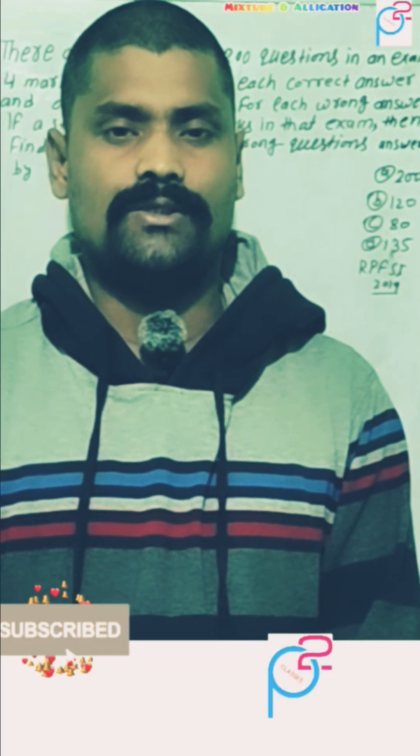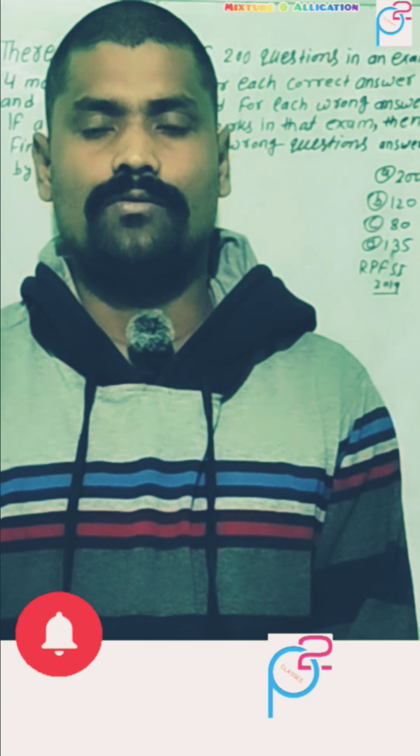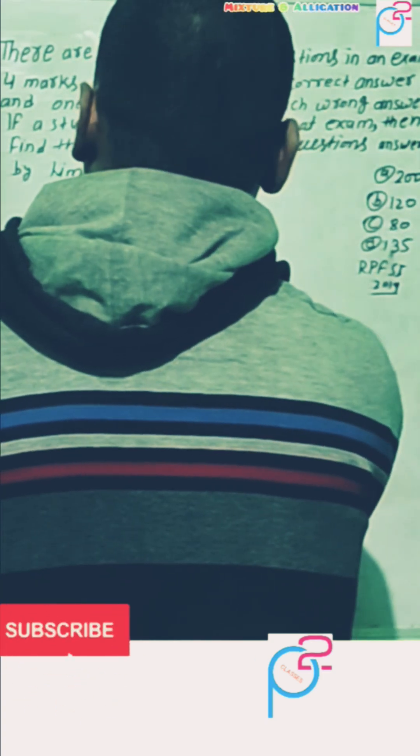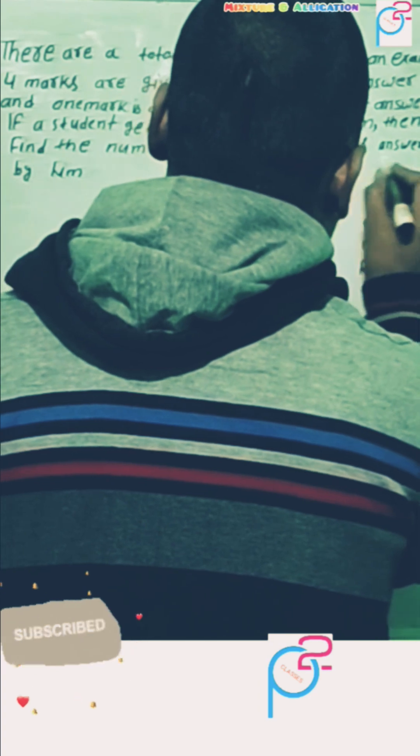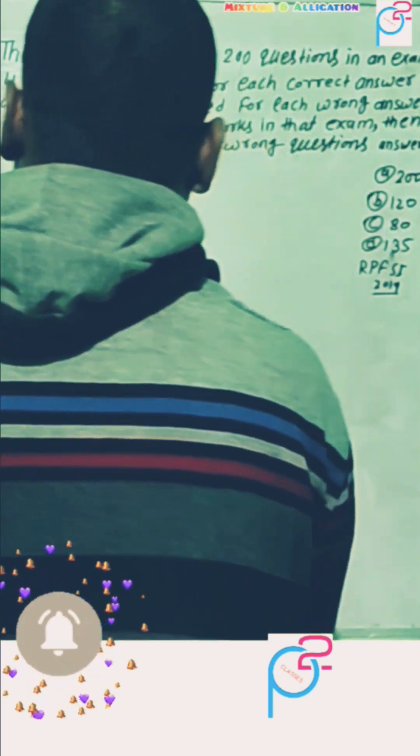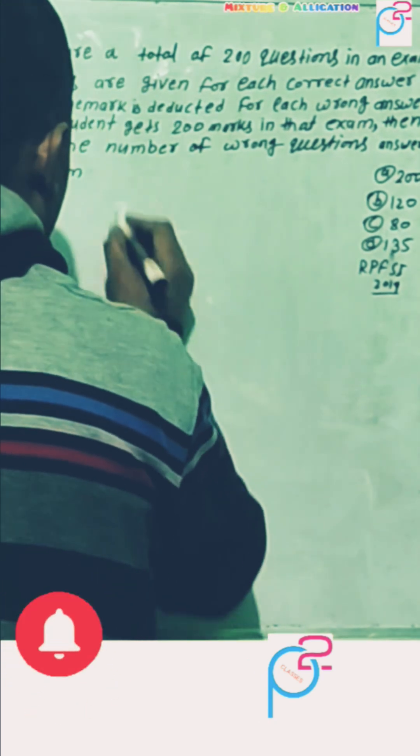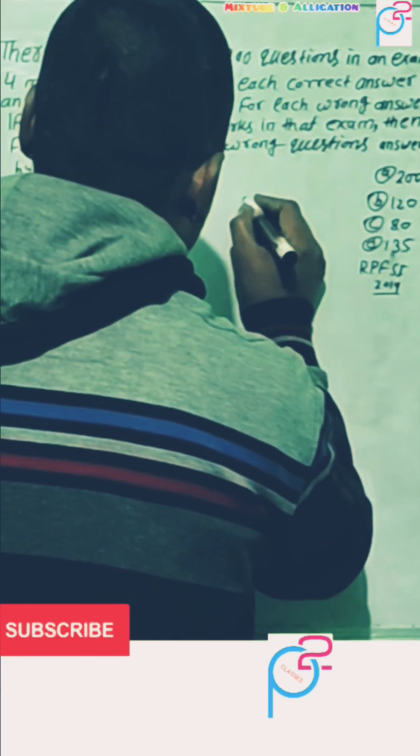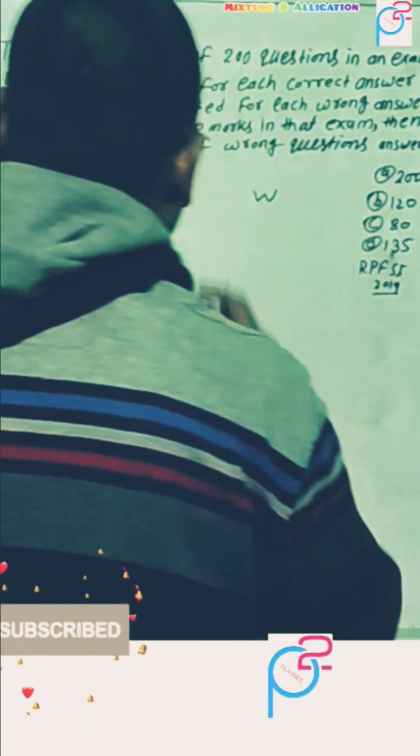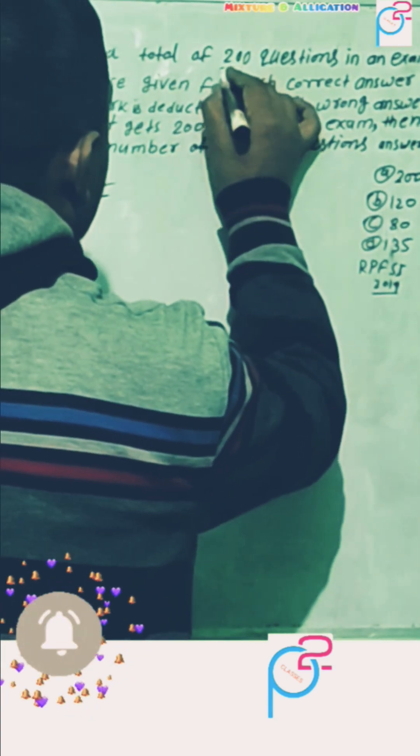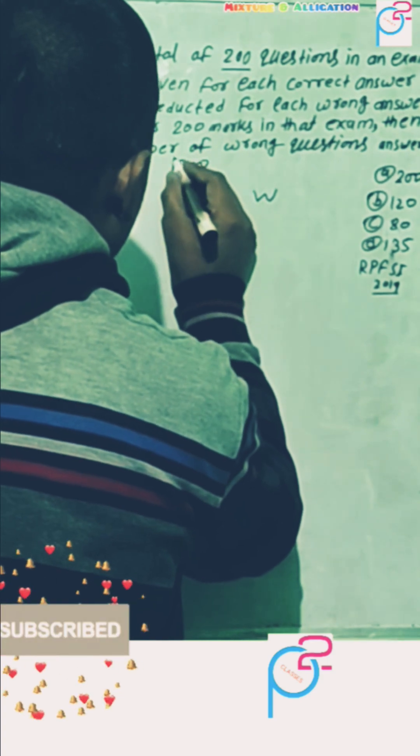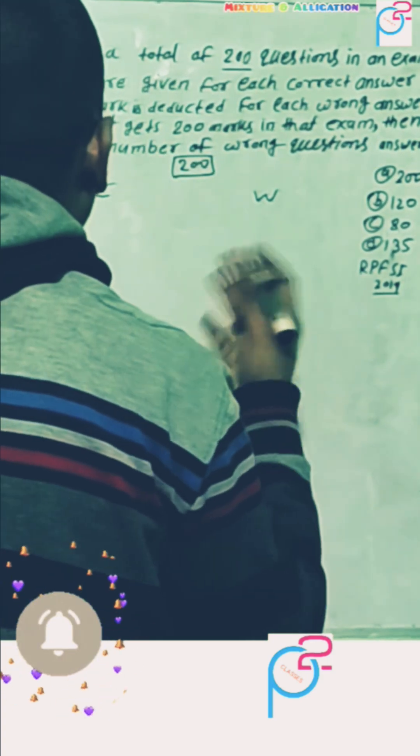Welcome to PS4 classes. Today we learn previous year question of RPF SI section math 2019. Then find the number of wrong questions answered by him. Firstly, write here what is given in question. We look at here, one is correct, C for correct and W for wrong. Only total number of question is 200. Okay, if all 200 questions are correct.